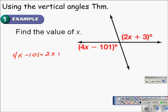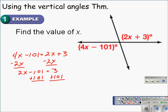And then we solve this equation. Subtracting 2x from both sides, giving us 2x minus 101 is equal to 3. And then we will add 101 to both sides. These go away, leaving us with 2x is equal to 104. And dividing both sides by 2, that gives us x is equal to 52.